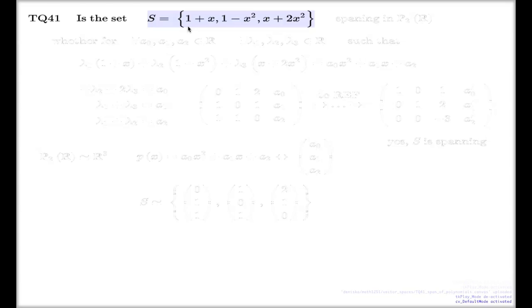Just one extra example about this padding set — it's question 41. It says: answer the question whether the set composed of these three polynomials is spanning in the vector space of polynomials of degree 2 or less. Remember, last time we first met the vector space of polynomials, and we now know that polynomials together produce a vector space.